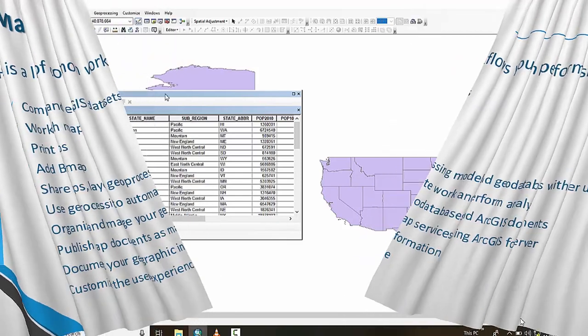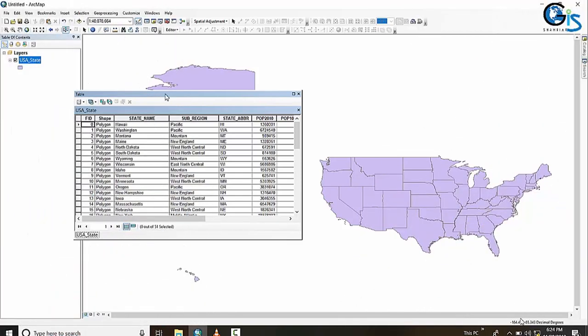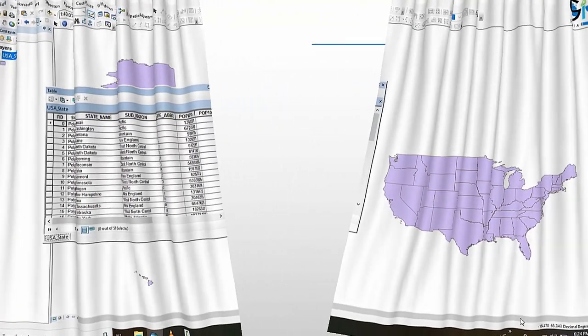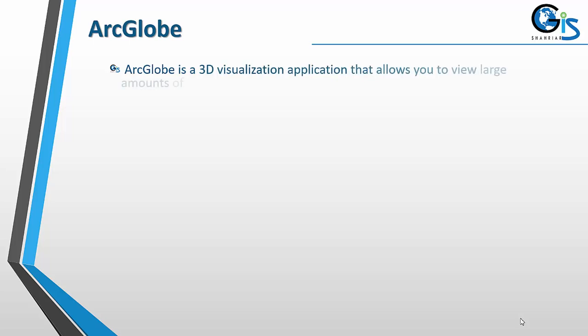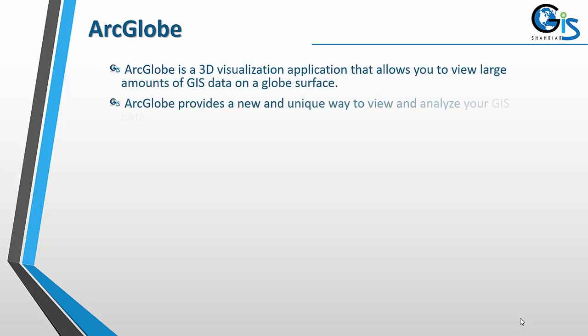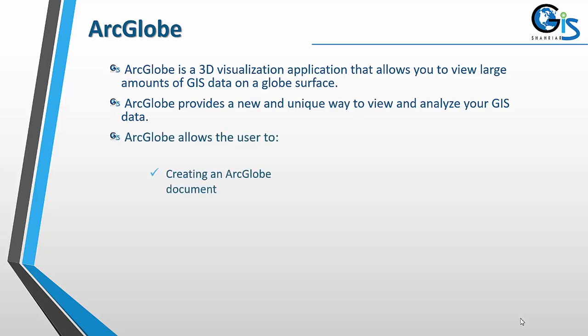Now let's see the interface of ArcMap. ArcGlobe is a 3D visualization application that allows you to view large amounts of GIS data on a globe surface.